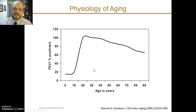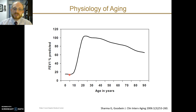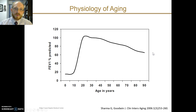This graph demonstrates changes with aging focusing on FEV1 — specifically FEV1 percent predicted over a person's lifespan, normalized to 100% being that individual's FEV1 at age 20. Early in life, during childhood and teenage years, a person's FEV1 increases. After age 20, lung function begins to decline, and by age 90 a person may be down about 20% from their personal best FEV1 — but these changes are part of normal aging.